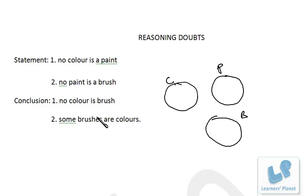Because nothing has been provided about the relationship between brush and color, whether no color is a brush or some brushes are color. If some brushes are color, then the Venn diagram will be drawn like this.